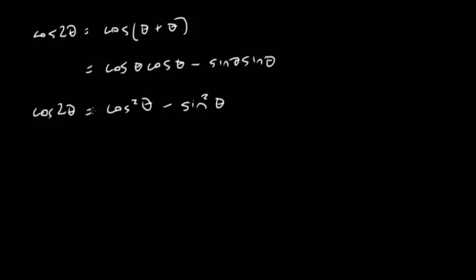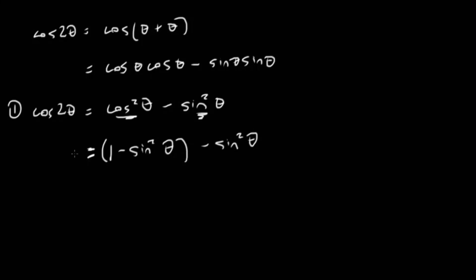There are two more formulas we can generate for cosine 2 theta. This is formula number one. The hint is: this looks like the Pythagorean identity, but it's a little bit different. Cosine squared theta plus sine squared theta equals 1. So cosine squared theta is just 1 minus sine squared theta. Substituting that in gives us 1 minus sine squared theta minus sine squared theta, which is 1 minus 2 sine squared theta. That is another formula for cosine 2 theta.